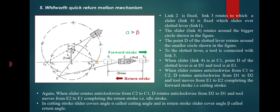When the slider rotates anticlockwise from D2 to D1, the tool moves from E2 to E1, completing the return stroke. During the cutting stroke, the slider covers angle alpha, called the cutting angle. During the return stroke, the slider covers angle beta, called the return angle. So alpha is the cutting angle and beta is the return angle.